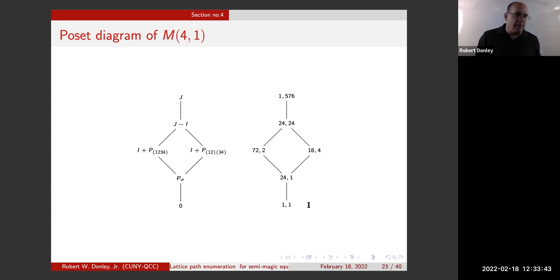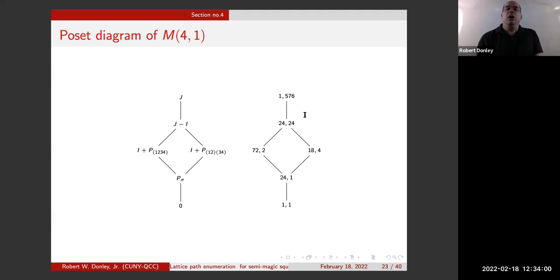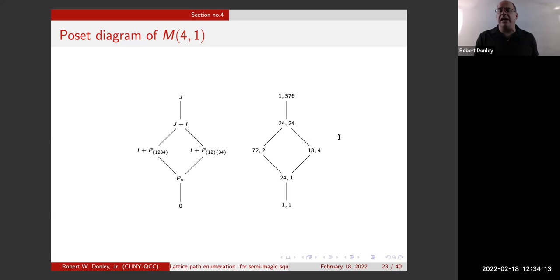Coming back to the poset for four: we have derangements, powers of two for paths, and the Latin square number for size four at the top. The one thing still at issue is the 24, which is not too hard to work out by hand, but I want to do it as a general argument because you'll just use that for cases five and six with slight adjustments.